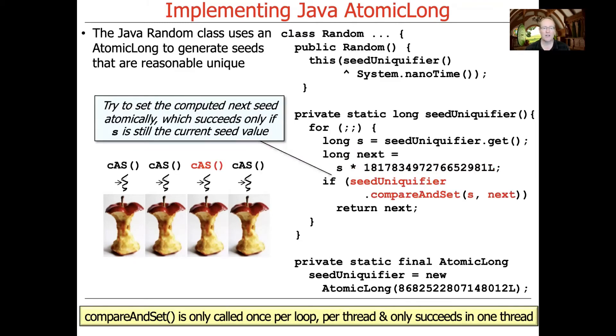And then what we're going to do is we're going to try to set the computed next seed atomically. And this is going to succeed if and only if S, which was the original seed, is still equal to the seed value.